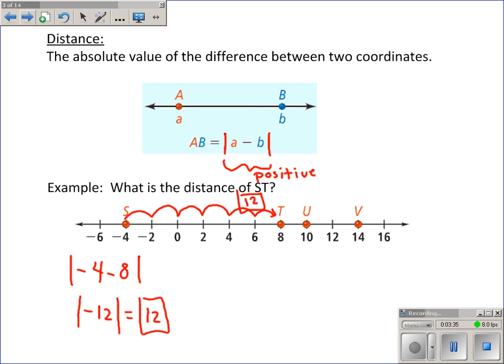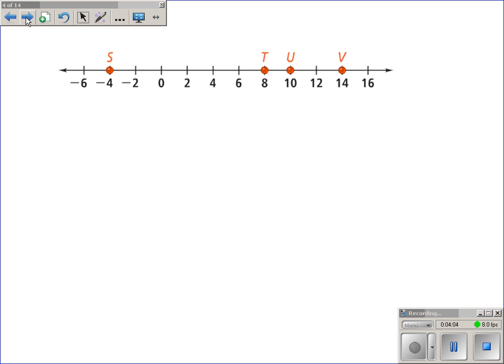Also, let me point out the fact that it doesn't matter which order you put it in. If you prefer to do 8 minus a negative 4, which minusing a negative is the same as adding, you get 12, absolute value of 12, which is still 12. If you prefer to use the picture or prefer to use the formula, either way it's fine, but you should be able to find the distance between two points and the length of a segment.